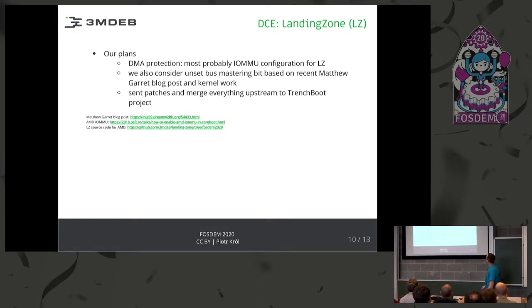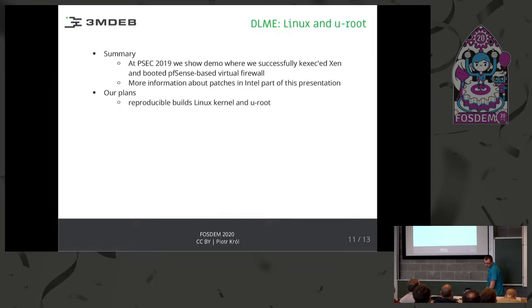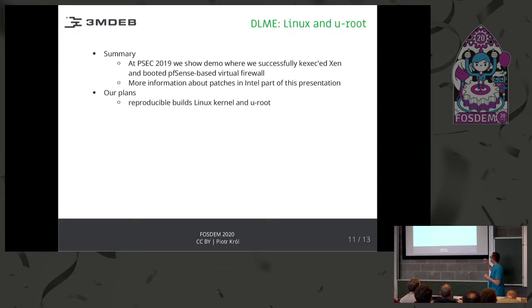Regarding DMA, Matthew Gareth recently provided a post suggesting there may be other ways to mitigate DMA attacks that may happen at the point of the dynamic launch event. In the case of Linux, Daniel will talk more about that. What we were able to do was to use Linux and u-root as a DLME, which kexec'd Xen, in which we ran a virtual firewall — PFSense in this case.